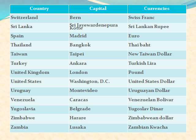United Kingdom: its capital is London and currency is Pound. United States: its capital is Washington DC and currency is United States dollar. Uruguay: its capital is Montevideo and currency is Uruguayan dollar. Venezuela: its capital is Caracas and currency is Venezuelan Bolivar.